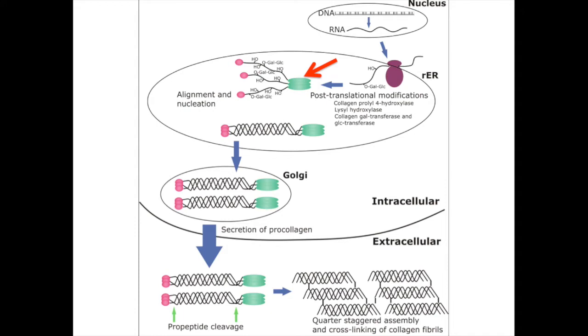After completion of the triple helix, the procollagens are cleaved, thereby triggering the assembly of collagen molecules into fibrils. As such, the c-propeptides have crucial roles in tissue growth and repair.